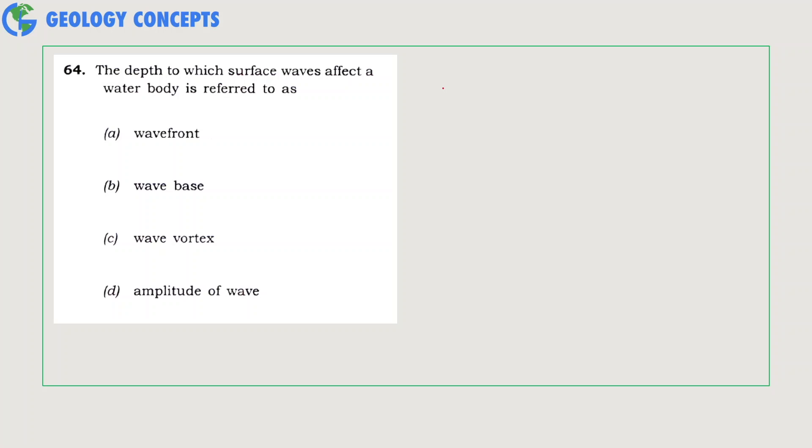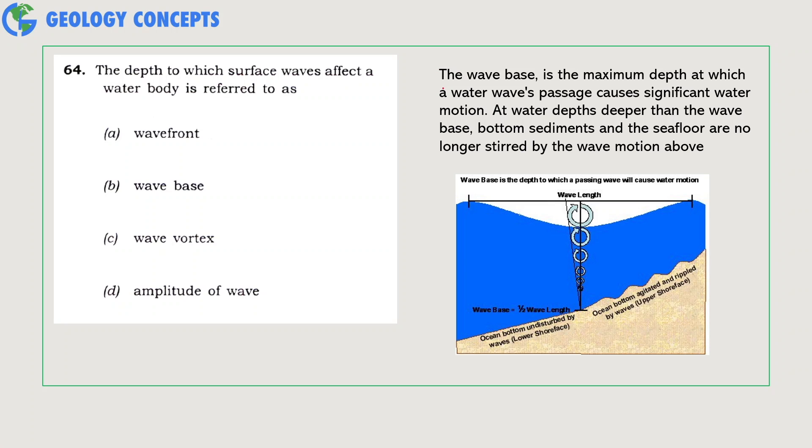The depth to which the surface waves affect a water body is referred to as wave front, wave base, wave vortex, or amplitude of the wave? The wave base is the maximum depth at which water wave passage causes significant water motion. At water depths deeper than the wave base, bottom sediments and the seafloor are no longer stirred by the wave motion above. Wave base is represented as half of the wavelength, as you can see from the diagram to your right. So the correct answer is option B, wave base.